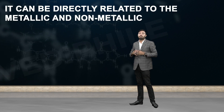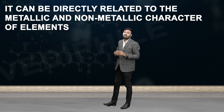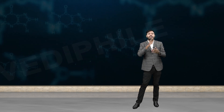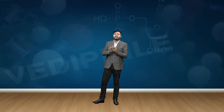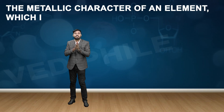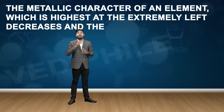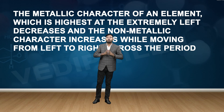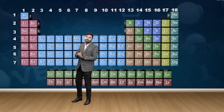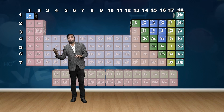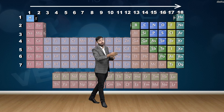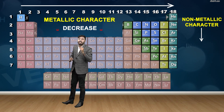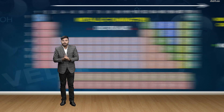It can be directly related to the metallic and non-metallic character of the element. The metallic character of an element is highest at the extreme left and decreases while moving from left to right across a period. Conversely, the non-metallic character increases from left to right. Metals are mostly on the left side, and as we move right, metallic character decreases while non-metallic character increases.